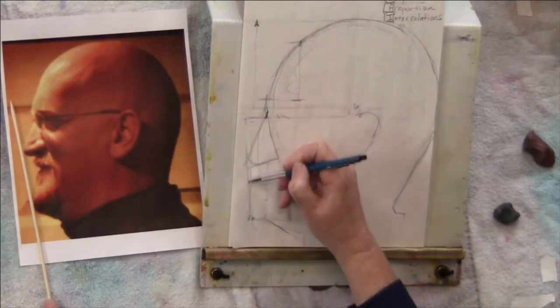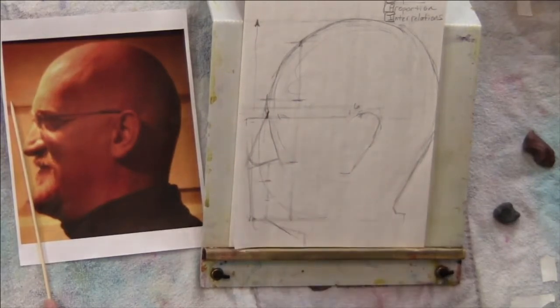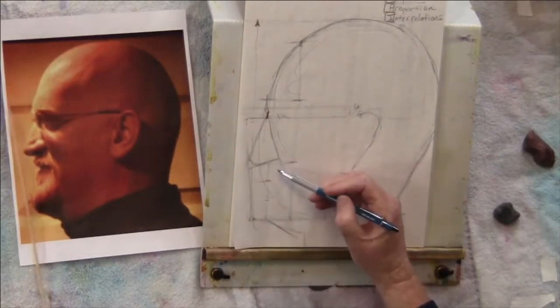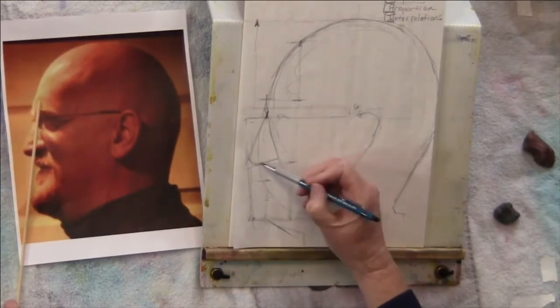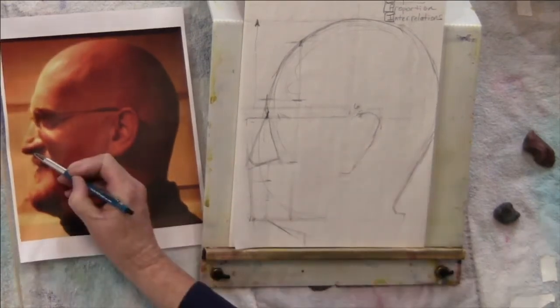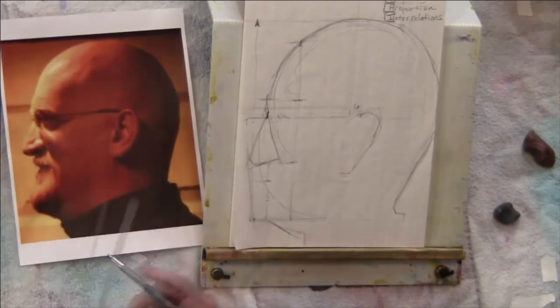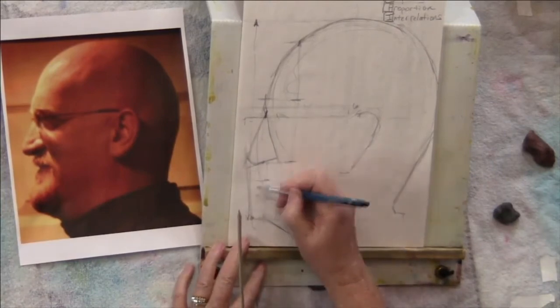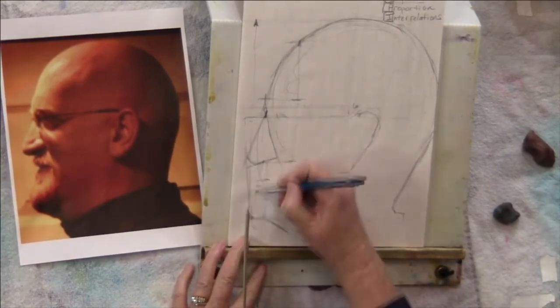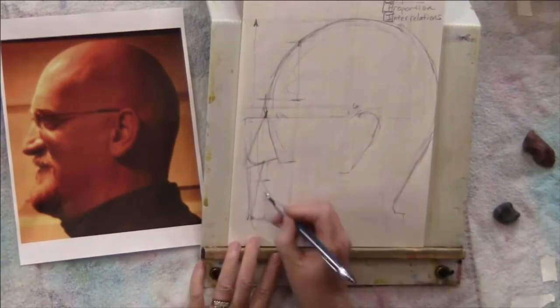Okay, another angle that's critical is this angle. And what's the relationship? Where does this point hit? It's about halfway, isn't it? A little beyond halfway. So I find that point and then I can vector up, so now I know where I can place the mouth.